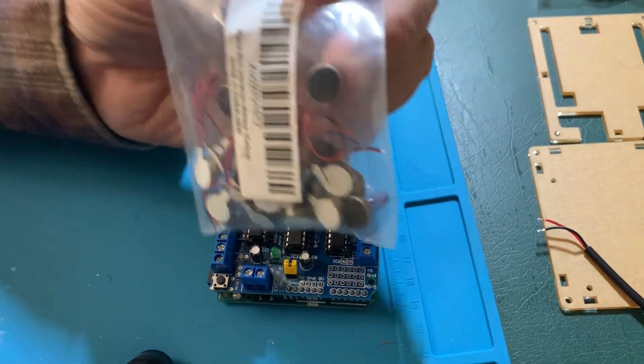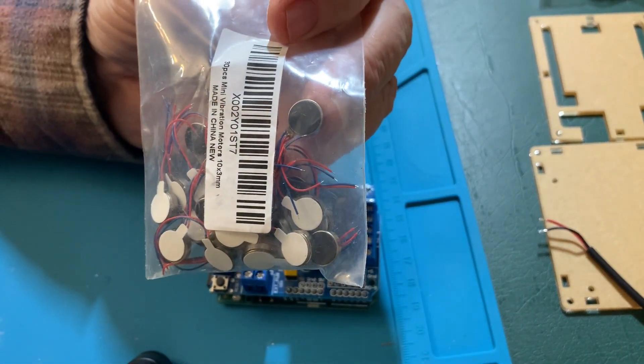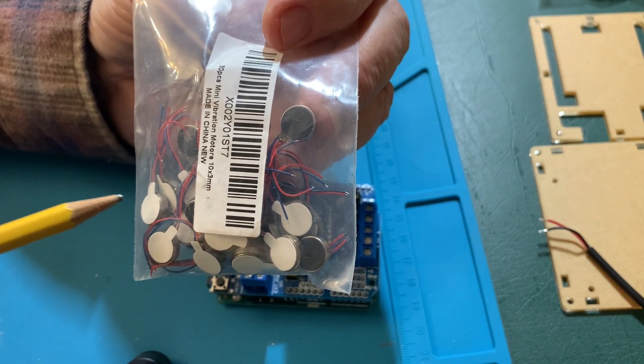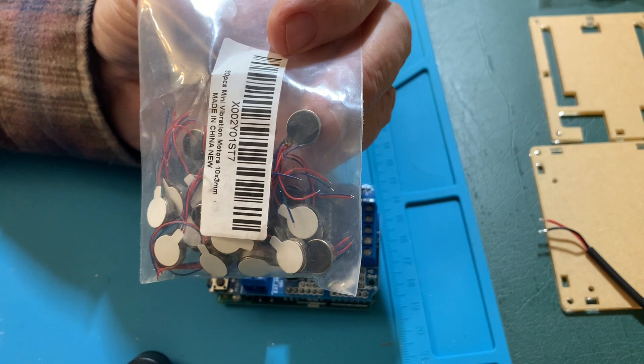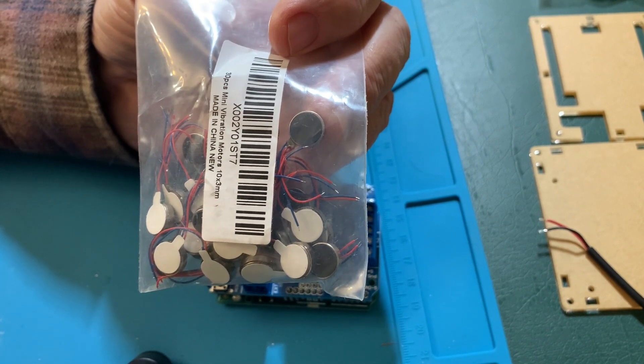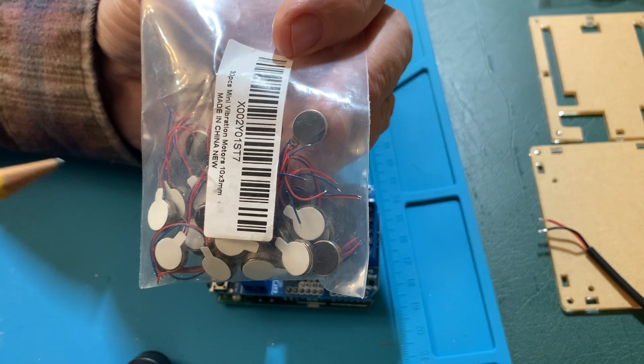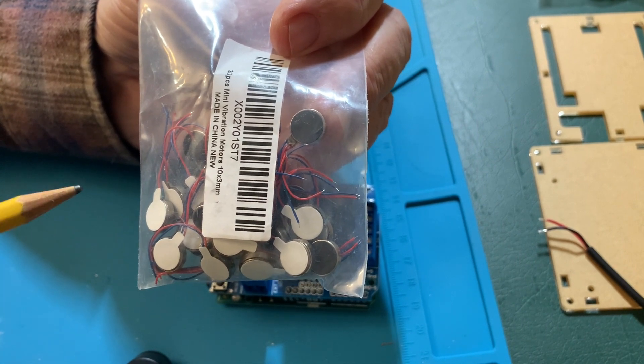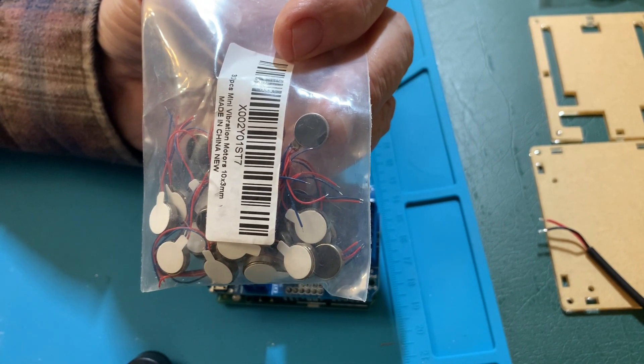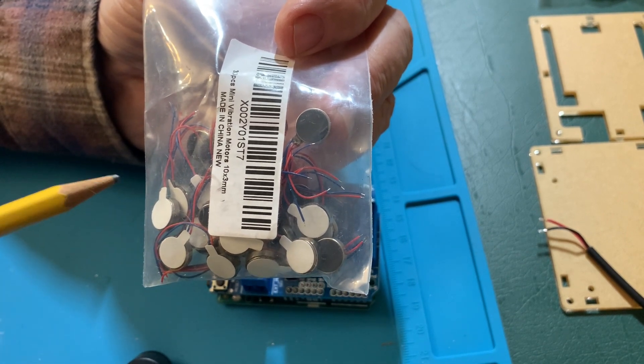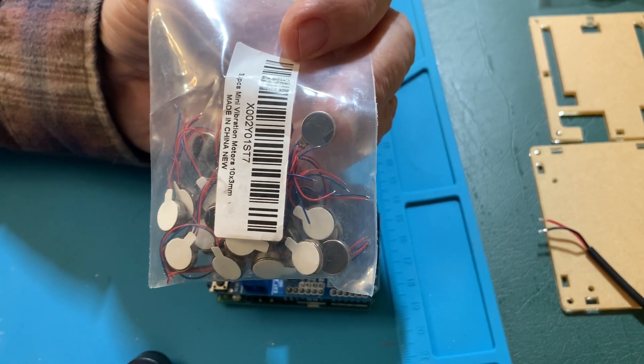These motors are from Amazon. They're quite inexpensive. These rotate at 12,000 rotations per minute. That is a bit below the Stanford specification of 250 hertz, which equates to 15,000 rotations per minute. In the notes, I'll give a link to these as well as the more expensive ones that do rotate at the 15,000.